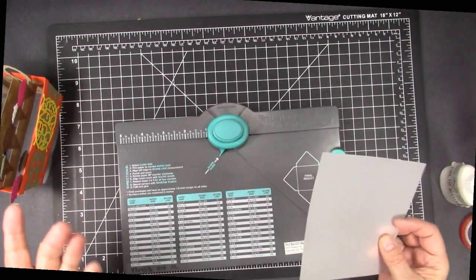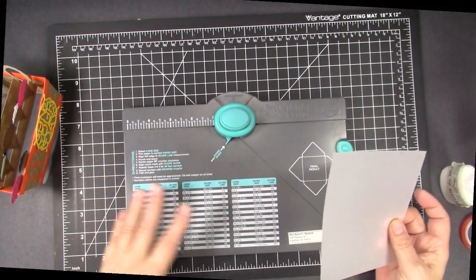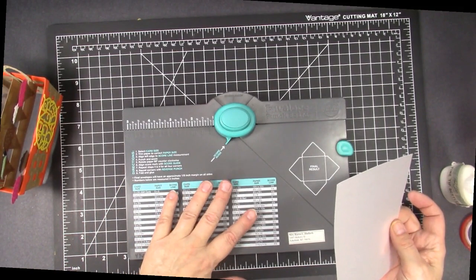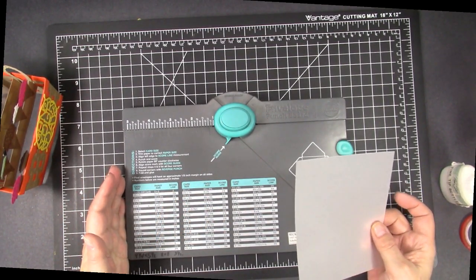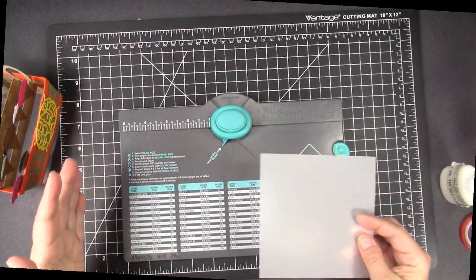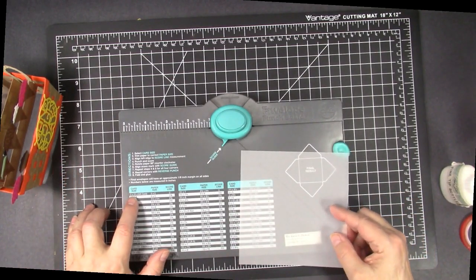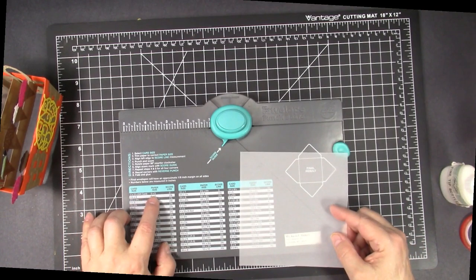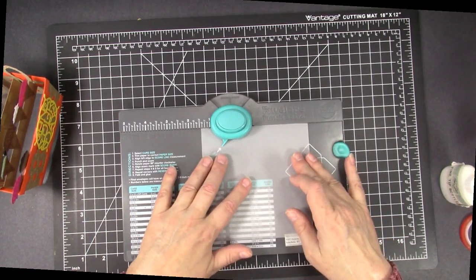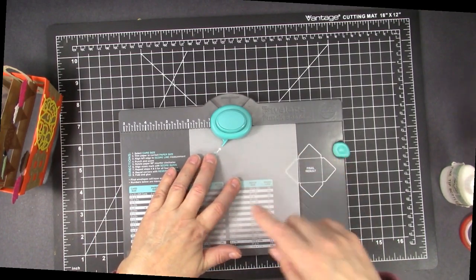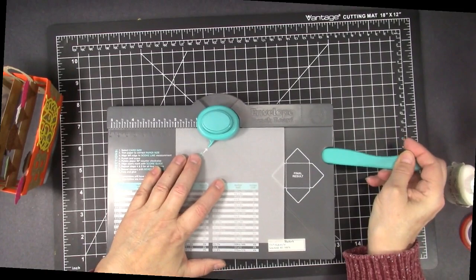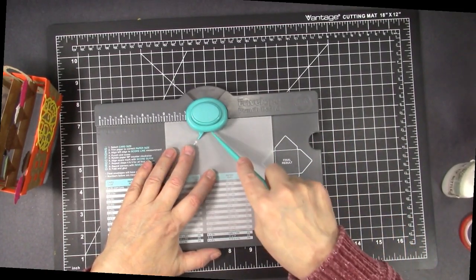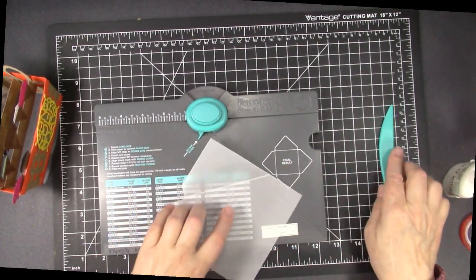So just a quick reminder on how to use the Envelope Punch Board. They've been around for a while and can be used for many things but the two by three and a half gift card size they say cut a paper size to five by five and then score on the two inch line. So you go down to two you punch and you score.